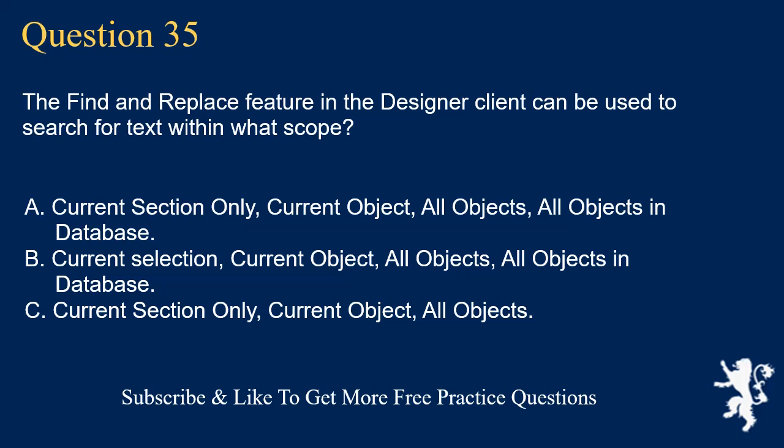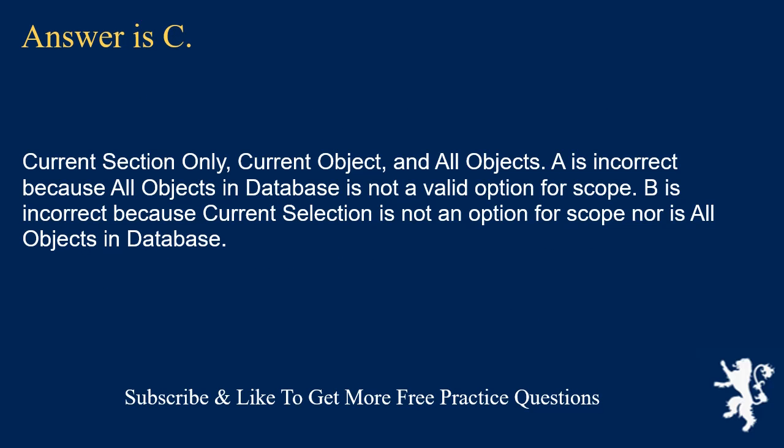Question 35. The find and replace feature in the designer client can be used to search for text within what scope? Current section only, current object, all objects, all objects in database. Current selection, current object, all objects, all objects in database. Current section only, current object, all objects. Answer is C: Current section only, current object, and all objects. A is incorrect because all objects in database is not a valid option for scope. B is incorrect because current selection is not an option for scope, nor is all objects in database.